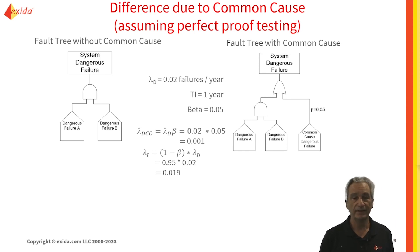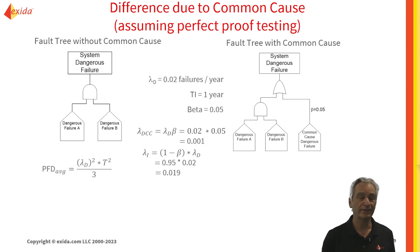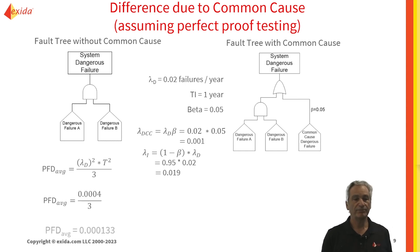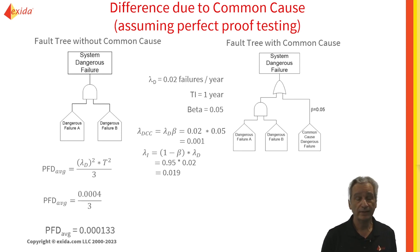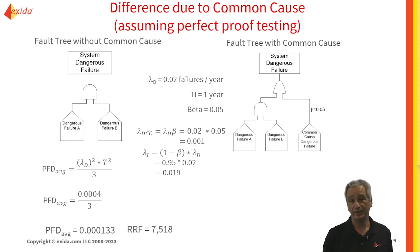Going back to the left-hand side of the fault tree — ignoring common cause — we know that to calculate the PFD average, it's going to be lambda_d squared times t squared over 3. If we plug in our numbers, we end up with a PFD average of 0.00133. The risk reduction factor is 1 over the PFD average, so dividing gives us a risk reduction factor of 7,500, which would tend to indicate this can achieve a fairly high SIL 3. Because we're not considering imperfect proof testing, these numbers will be much higher than they would otherwise be, but for comparison purposes that's fine.